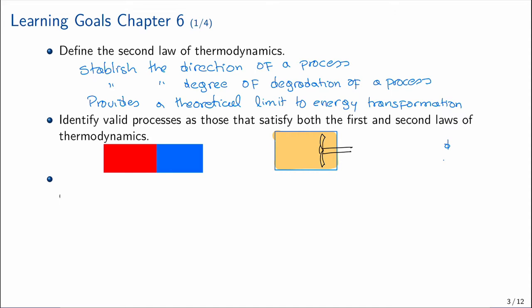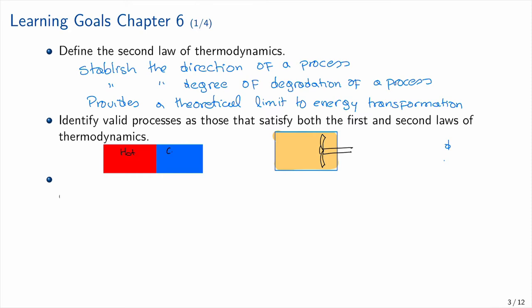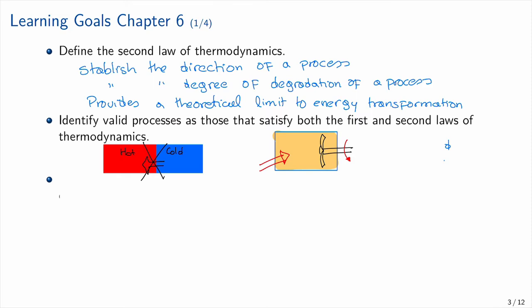There are two examples to consider. On the left, we have a hot body and a cold body — heat transfer goes from hot to cold, so the reverse direction would be wrong. The second law establishes the proper direction. On the right, for a closed system receiving heat transfer and having a shaft, it will not produce rotational movement from heat input alone — work out is not possible in that configuration, so this is not a valid process.